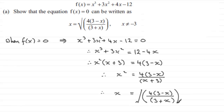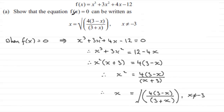And obviously x cannot equal minus 3, because if it did we'd have 3 minus 3 in the denominator, which equals 0, and anything divided by 0 is undefined. So I've been able to show that if f(x) equals 0, the equation can be written in that form.